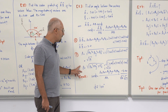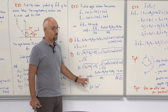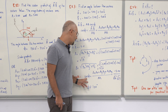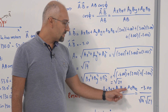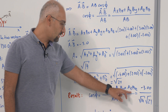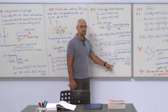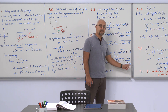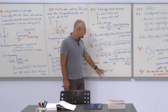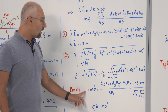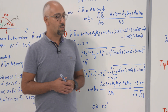With the magnitudes computed — square root of 14 and square root of 21 — and the dot product result of -3, we apply arccos to find phi. The result is approximately 100 degrees, which is the angle between the two vectors.